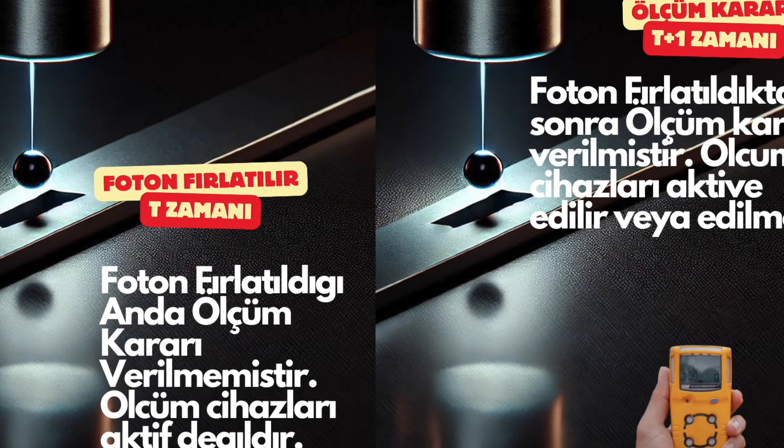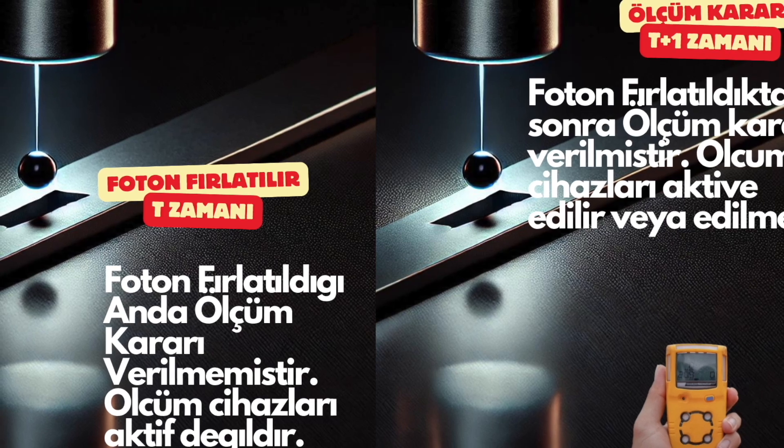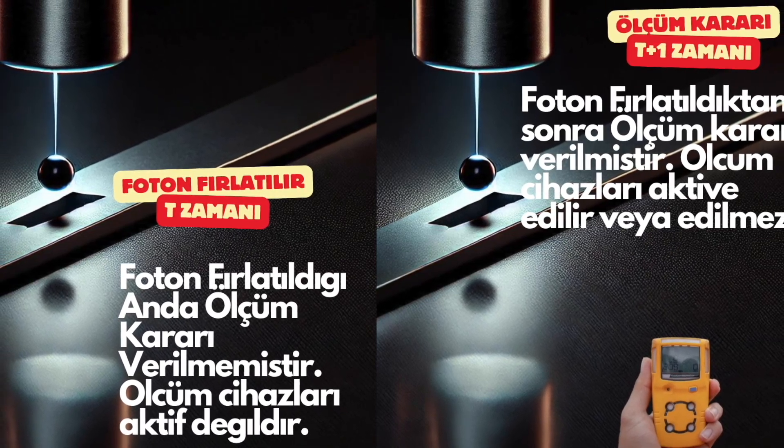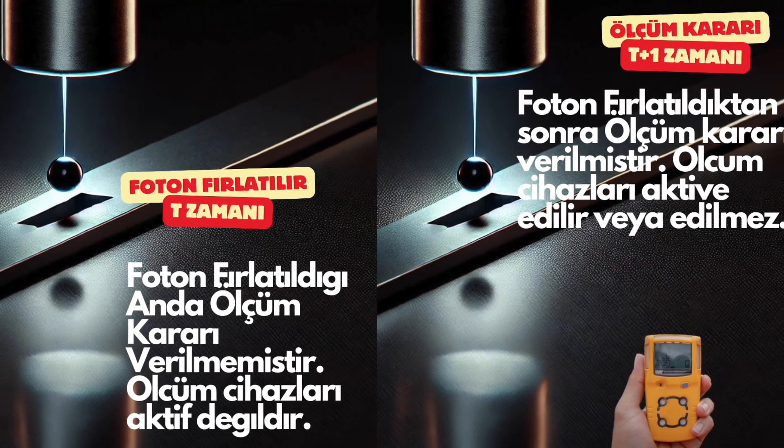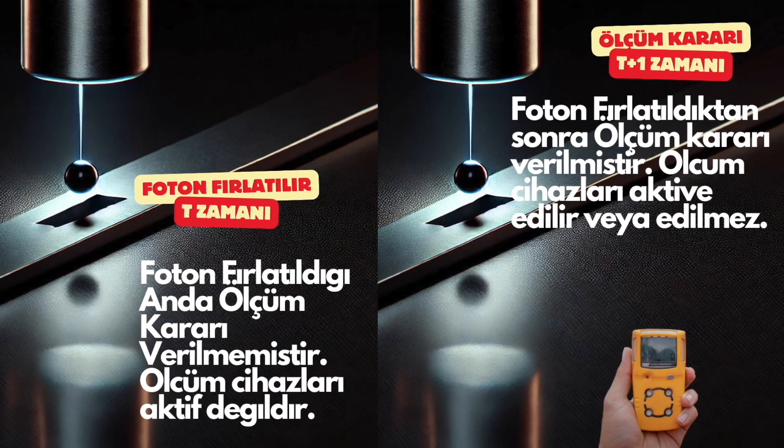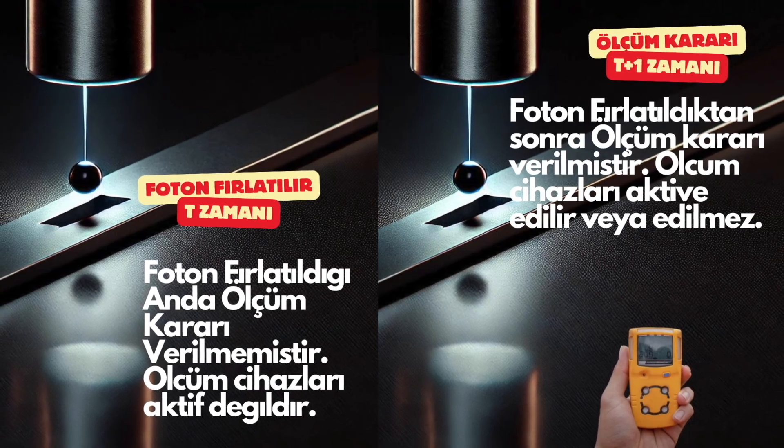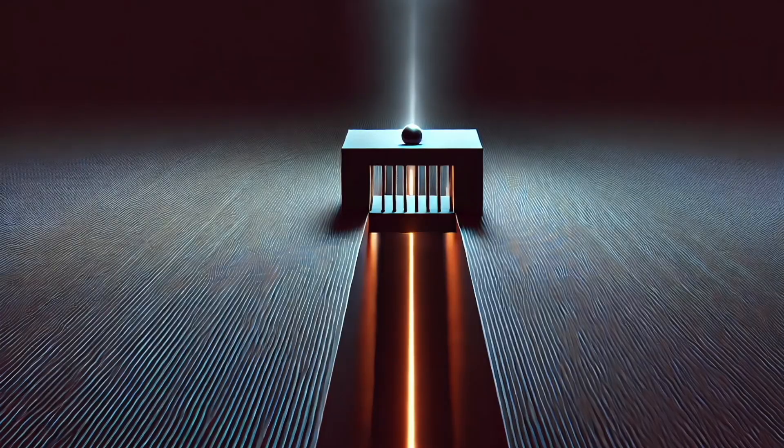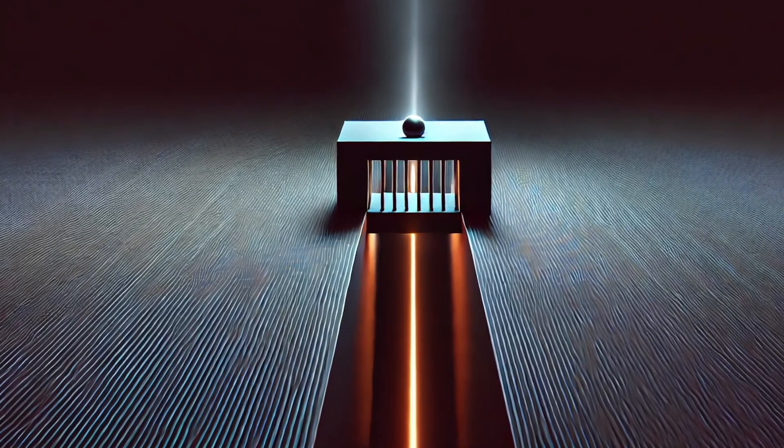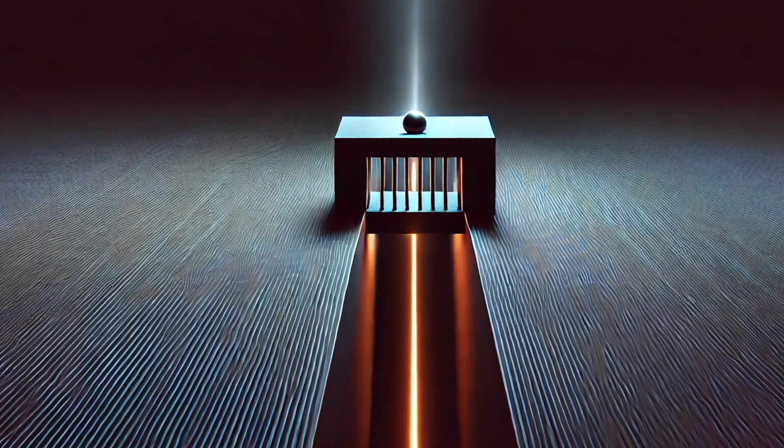The 2015 Delayed Choice Double Slit Experiment at Australian National University is the materialization of high imagination. To simplify the experiment as much as possible, after photons were sent to the slits but before they reached the slits, a random decision was made either to measure or not measure the photons.